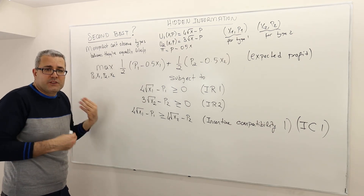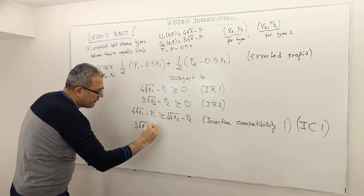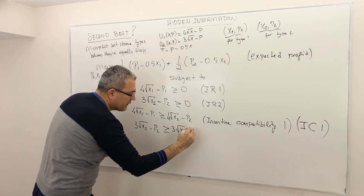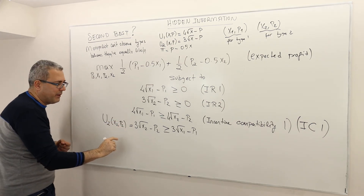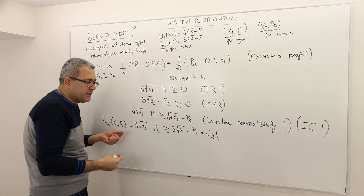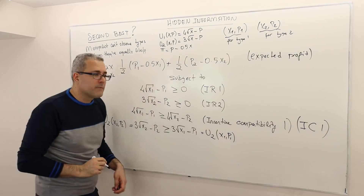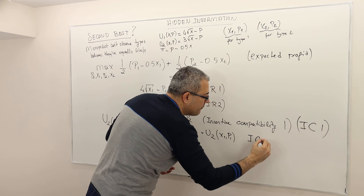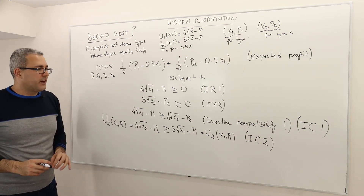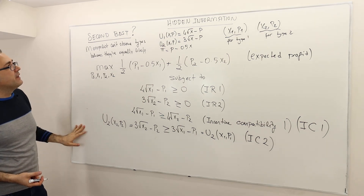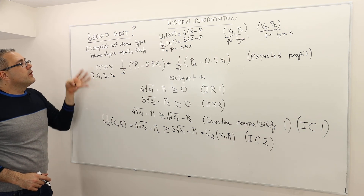We also need the incentive compatibility constraint for type 2: type 2 should buy his own package rather than buying the other. This is the utility of type 2 consuming the X2P2 package, which must be greater than or equal to his utility if he consumed the first package designed for type 1. That's IC2. With these four constraints — two IR and two IC — solving this optimization problem gives us the second best.